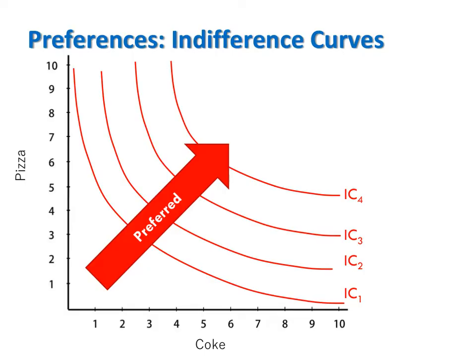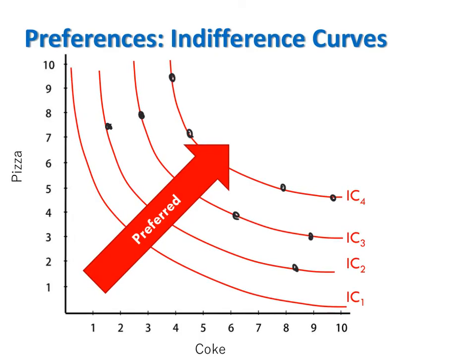Notice that when more is better, the further we move in this direction away from the origin, the higher the level of utility. Any bundle on IC4, regardless of where it's located, is strictly preferred to any bundle on IC3. Any bundle on IC3, regardless of where it's located, is strictly preferred to every bundle on IC2.